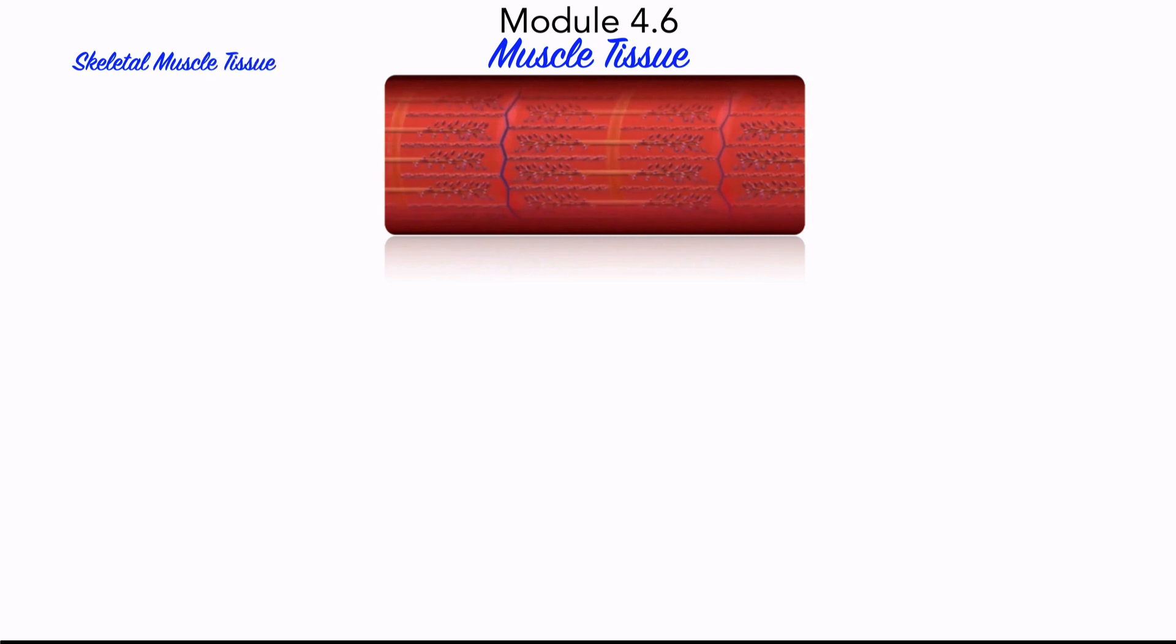There are three types of muscle tissue in the body: skeletal, cardiac, and smooth muscle tissues. The contraction process is the same in all of them, but the organization of their actin and myosin filaments differs.